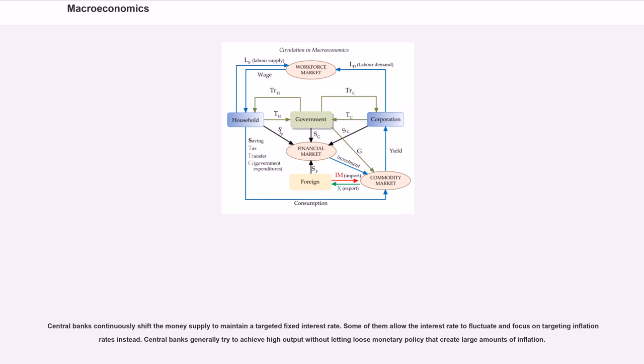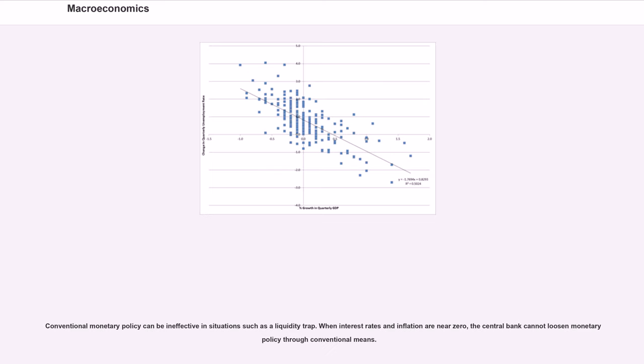Central banks continuously shift the money supply to maintain a targeted fixed interest rate. Some of them allow the interest rate to fluctuate and focus on targeting inflation rates instead. Central banks generally try to achieve high output without letting loose monetary policy that create large amounts of inflation.